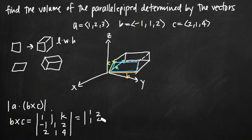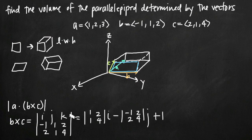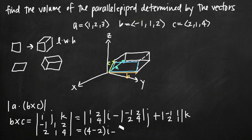We get (1, 1, 2, 4) times i — everything not in i's row or column, which is the 2×2 square of 1, 1, 2, 4 — multiplied by i. Then we subtract the same for j: (-1, 2, 2, 4) times j. Then we add for k: (-1, 1, 1, 1) times k. Simplifying: 1×4 − 1×2 = 4 − 2 for i; then −((-1)×4 − 2×2) = −(−4 − 4) for j; then ((-1)×1 − 2×1) = (−1 − 2) for k.